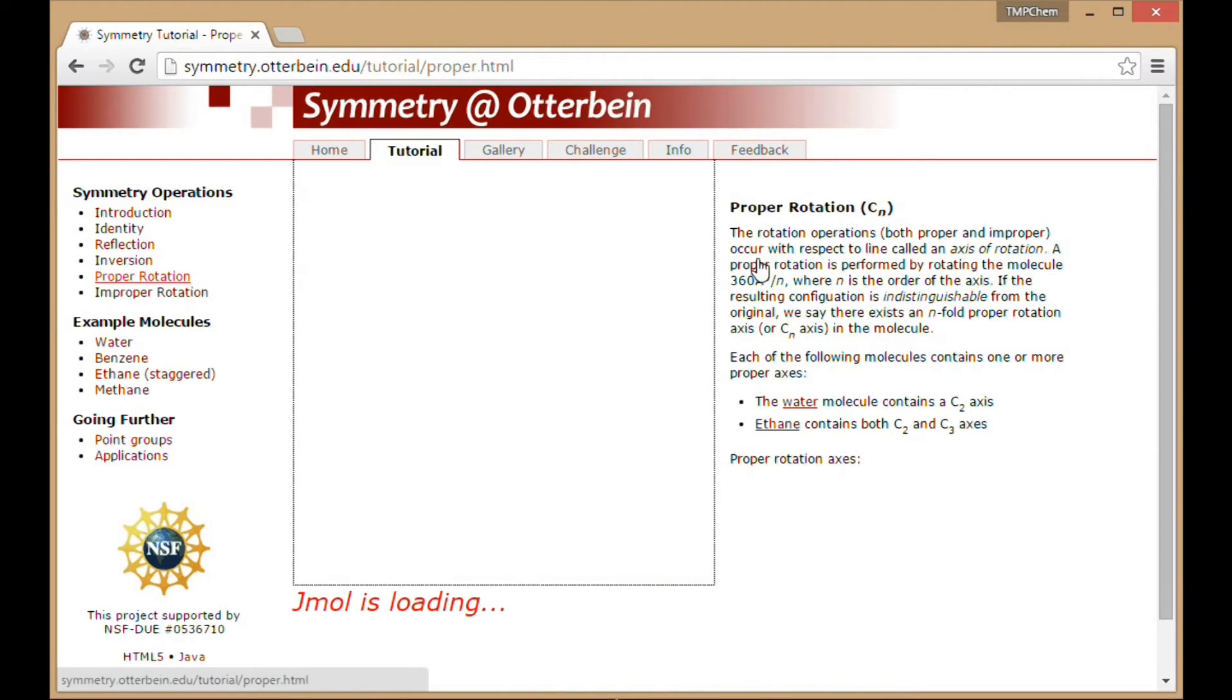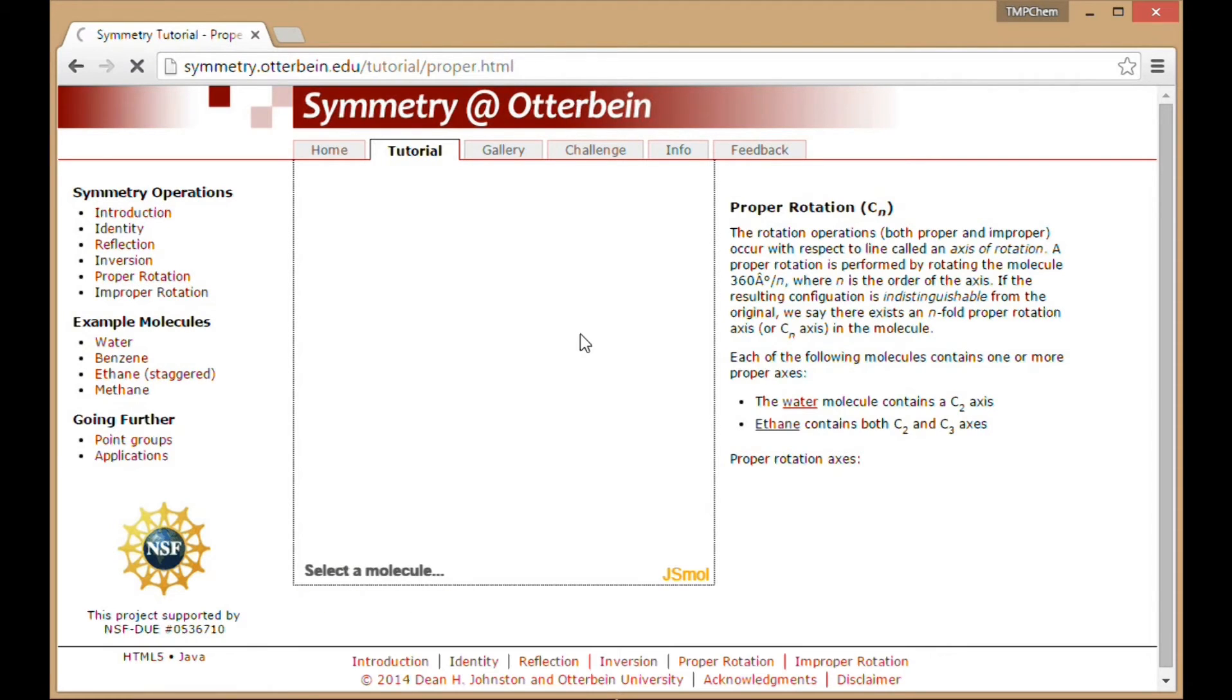Proper rotation. I think we're going to have water come up here. So proper rotation, water has a C2 axis. You see that you can rotate the molecule by 180 degrees through this angle that we're viewing it. And you'll get the same molecule out. So it rotates by 180 degrees counterclockwise looking down that axis. That's a C2 axis.